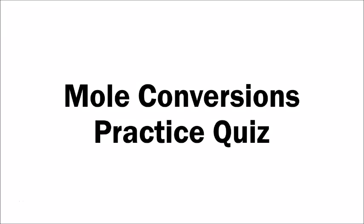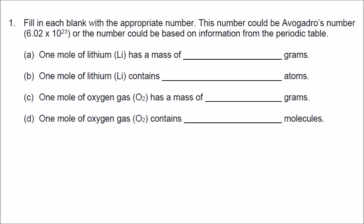These are the answers to the practice quiz on mole conversions. In number one, we have to fill in each blank with the appropriate number. This number could be Avogadro's number, 6.02 times 10 to the 23rd, or the number could be based on information from the periodic table.